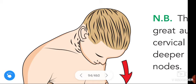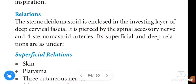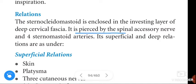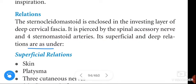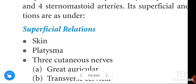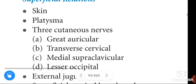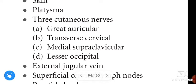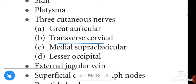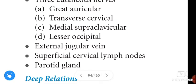The relations of the sternocleidomastoid: it is enclosed in the investing layer of the deep cervical fascia. The superficial relations include: skin, platysma, and three cutaneous nerves — the greater auricular, transverse cervical, and medial supraclavicular nerves — as well as the external jugular vein, superficial cervical lymph nodes, and the parotid gland.